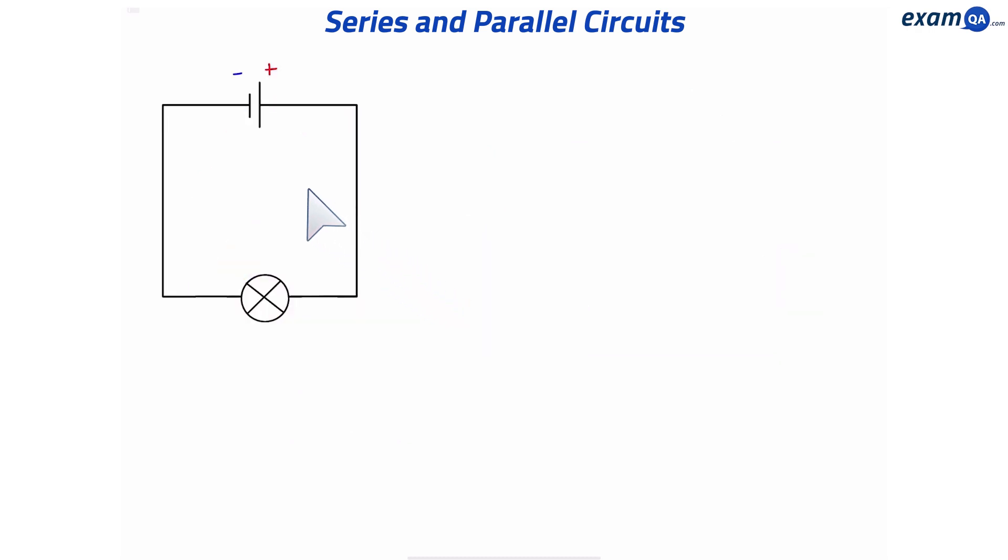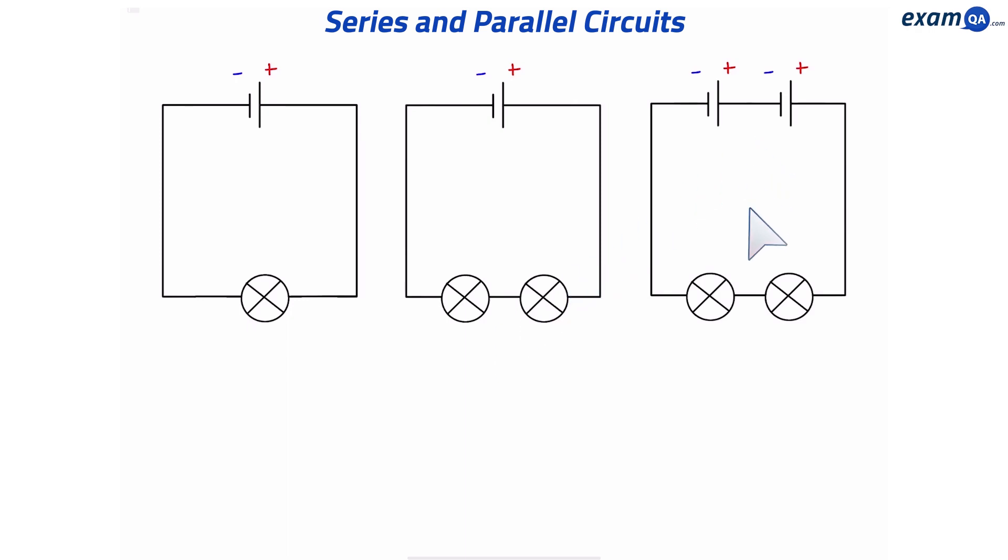Okay, so here we have a circuit with one bulb. Here's another circuit with one cell and two bulbs. And in this one, we have two cells and two bulbs. So here's the question. Which circuit will have the brightest bulbs? Hint, there's more than one answer.